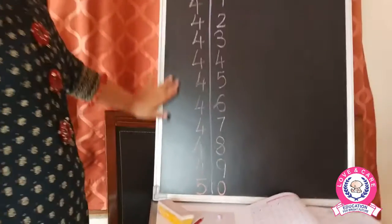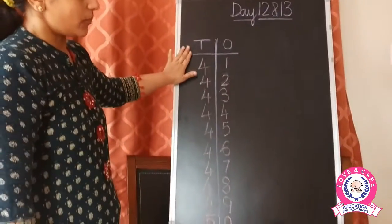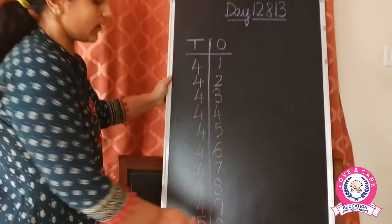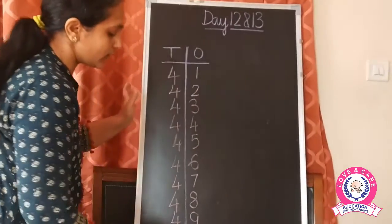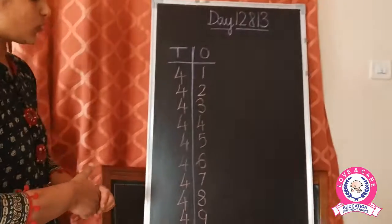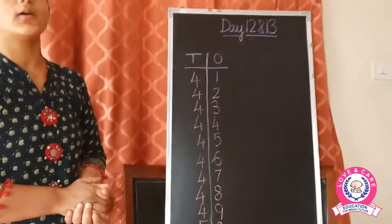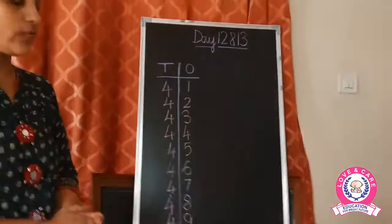With this we have completed writing. We have completed learning how to write numbers 1 to 50.